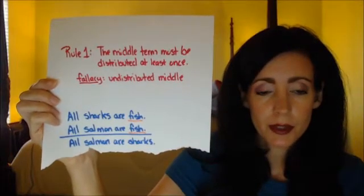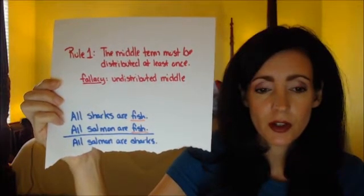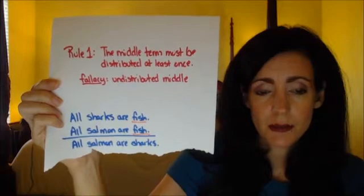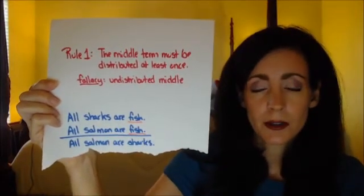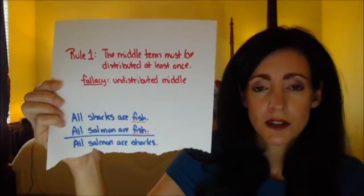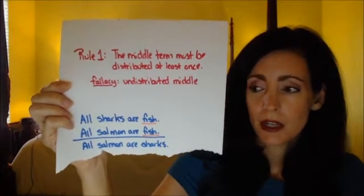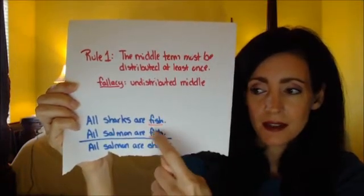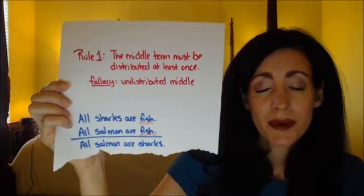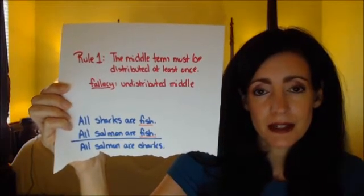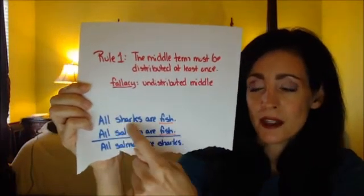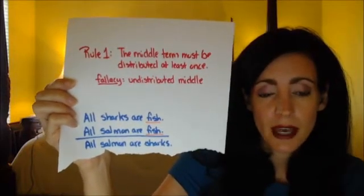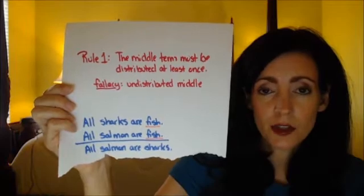Here's an example. We have: 'All sharks are fish. All salmon are fish. All salmon are sharks.' Both premises are A statements. With A statements, the subject is the distributed term. The middle term here is 'fish,' and in both instances it's in the predicate position — so it's not distributed. In the first sentence 'sharks' is distributed; in the second, 'salmon' is distributed. So this categorical syllogism commits the fallacy of the undistributed middle.